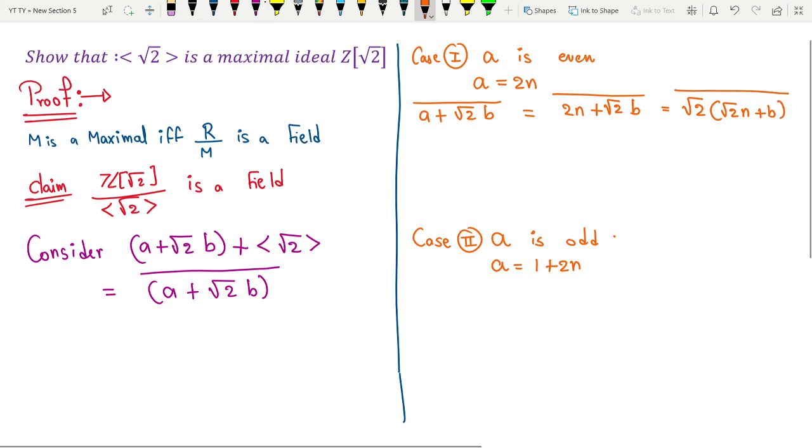Can you observe that this is nothing but an element of my ideal generated by root 2? So if it is an element of the ideal generated by root 2, its bar must be same as 0 bar. Hence whenever a is an even number, the entire coset is same as 0 coset.